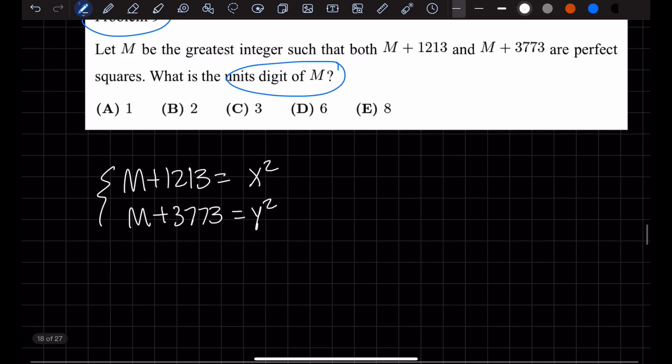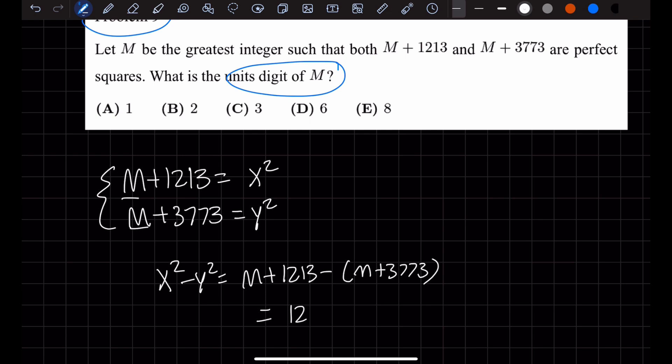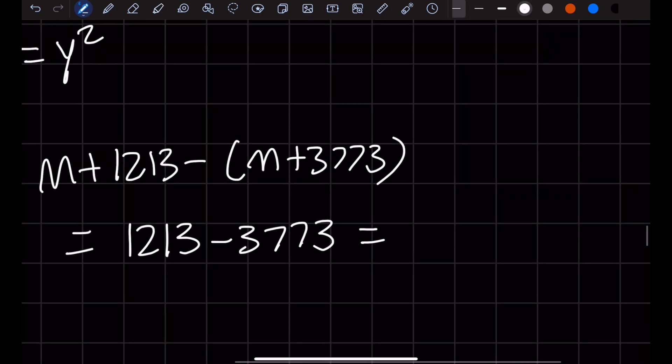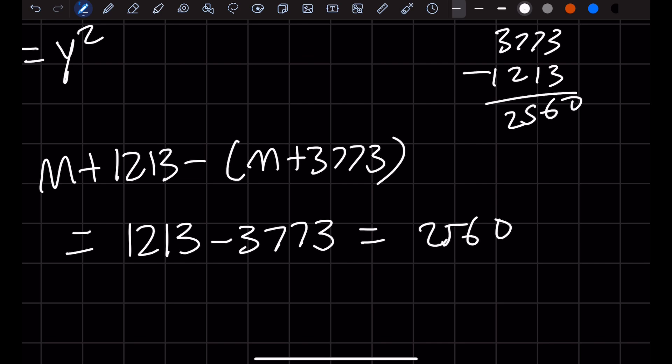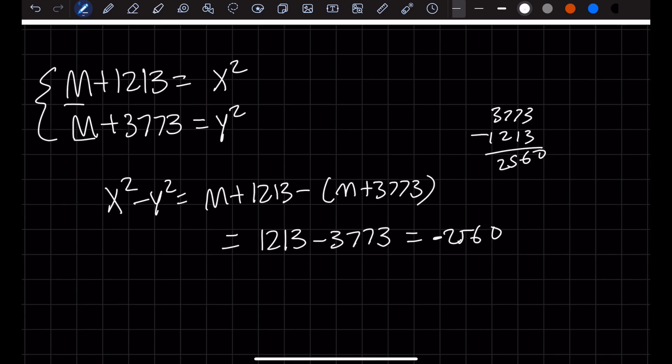We're given this expression. Let's try to get rid of the M's by subtracting these two equations. If we do x squared minus y squared, this would be M plus 1,213 minus M plus 3,773. This equals 1,213 minus 3,773, which gives us negative 2,560. Since we don't want the negative sign, let's multiply by negative one on both sides. So we have y squared minus x squared equals 2,560.